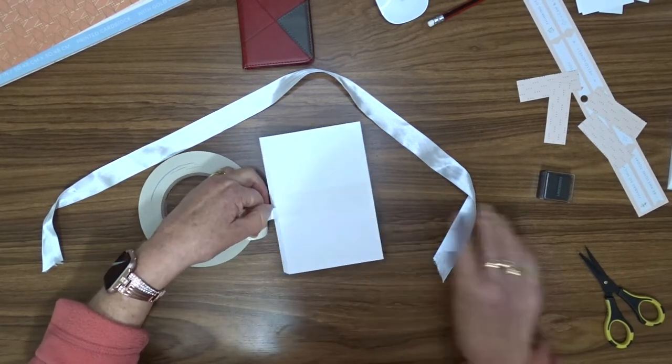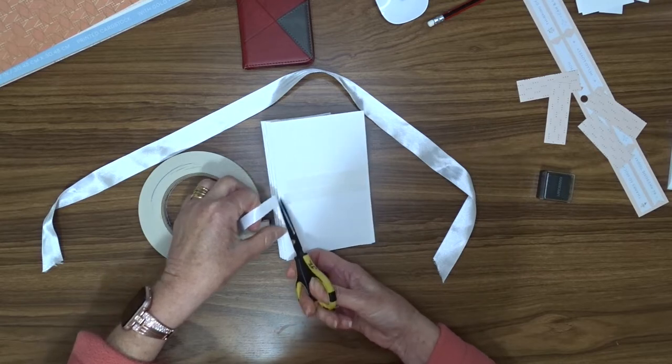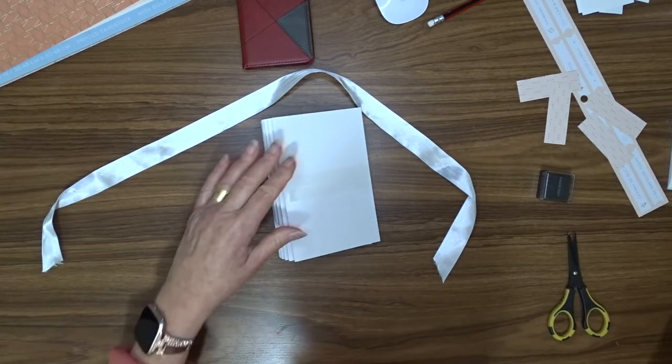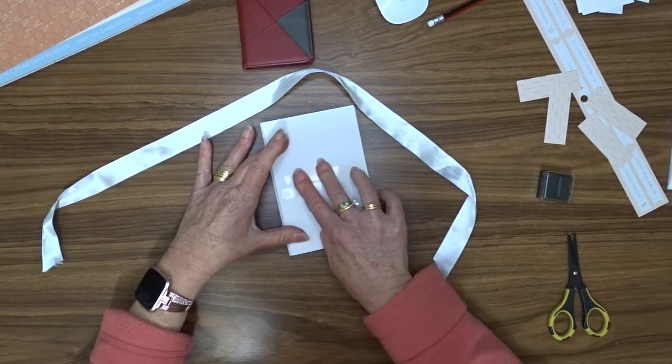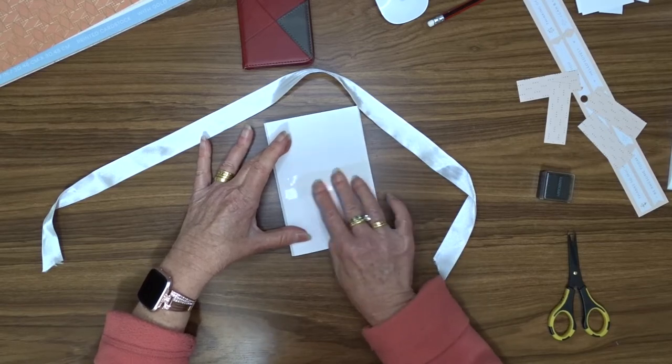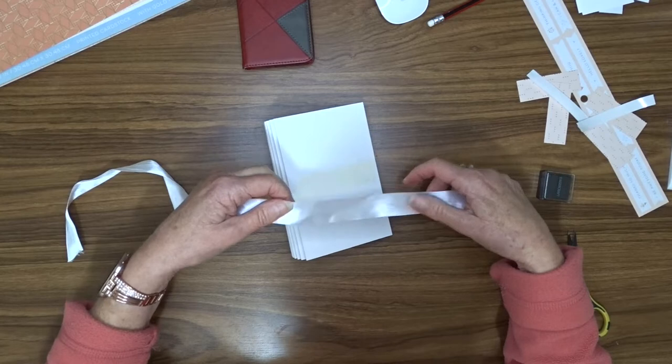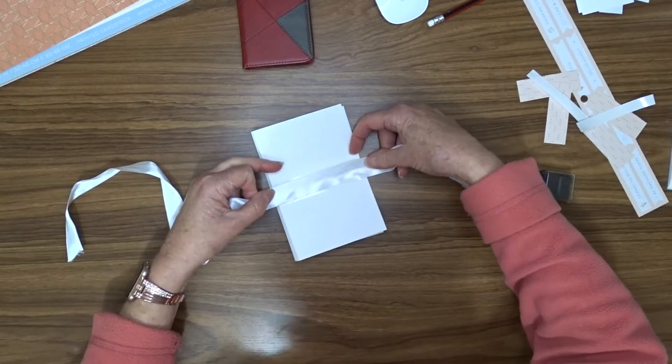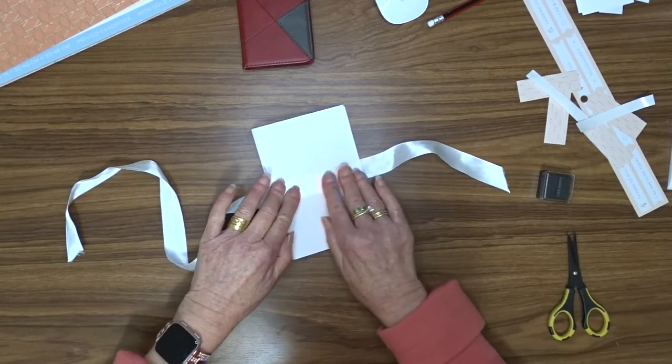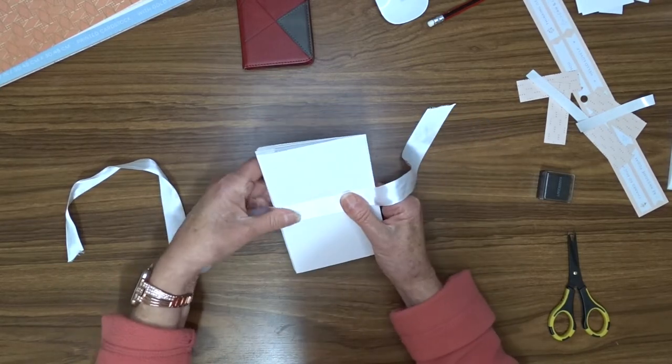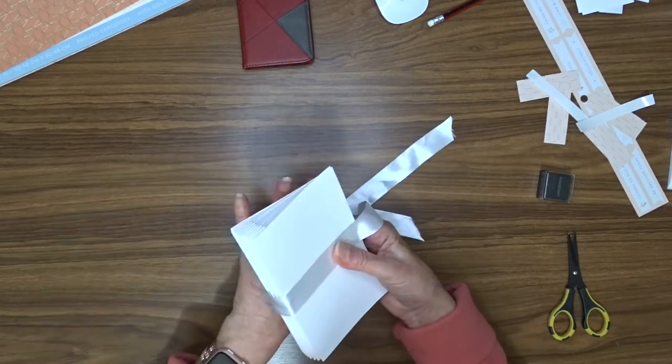So I'm just using some double-sided tape to attach that ribbon to the front of the card before I put my decorative paper on top. I'm only attaching it on the top of the card, not around the back or the sides, because if I do, that would impede the opening of the card. So make sure you only put your tape and attach your ribbon to the front of the card.